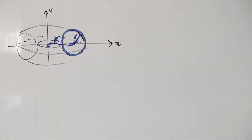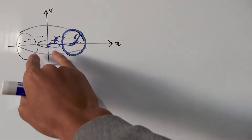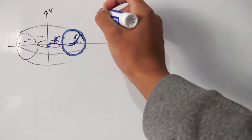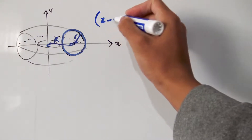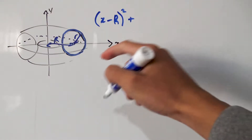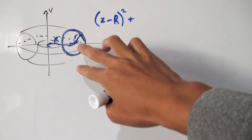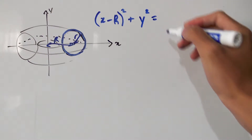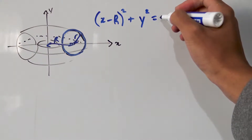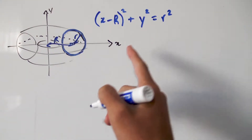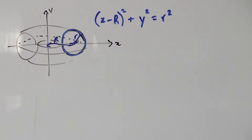The circle is being displaced R units to the right along the x-axis, so our equation of the circle will be (x minus R) squared, plus — since the circle is not being moved up or down — y squared, equals r squared. This is the equation of our circle, and we're revolving it all the way around the y-axis to get the shape of a doughnut.